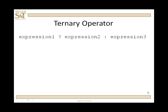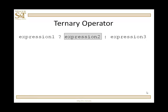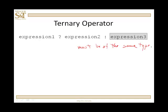This is the only operator in C++ considered to have three operands. The syntax is: expression one, question mark, expression two, colon, expression three. Expression one is a C++ expression that can be evaluated to either true or false, or a numerical value — non-zero is true and zero is false. Expression two and expression three must be of the same type, and these two are the candidates to be returned by this operator.